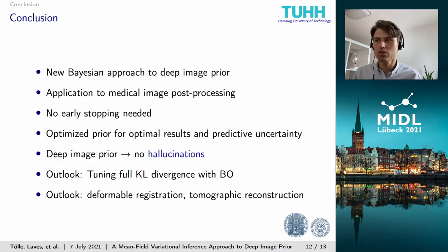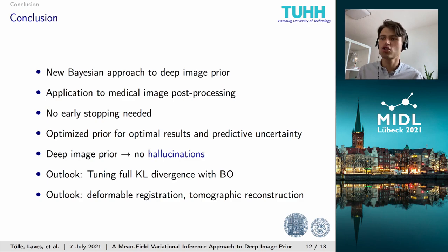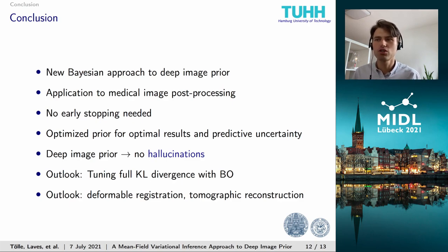We presented a new Bayesian approach to deep image prior with mean field variational inference and showed its applicability to medical image post-processing for inverse problems. By utilizing Bayesian techniques, the need for early stopping in deep image prior was made obsolete. We optimized the shape of the prior with Bayesian optimization and increased performance in terms of peak signal-to-noise ratio and predictive uncertainty, which happens to be well calibrated. The concept of deep image prior does not need supervised training, which makes the occurrence of hallucinations impossible. In the future, our approach can be used to tune the full KL divergence and not just the prior, and the approach can be applied to other inverse problems in the medical domain, such as deformable registration or tomographic reconstruction.